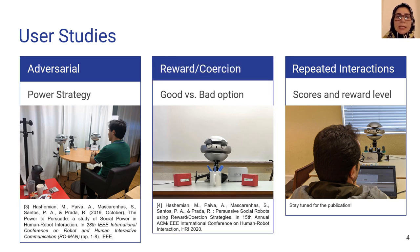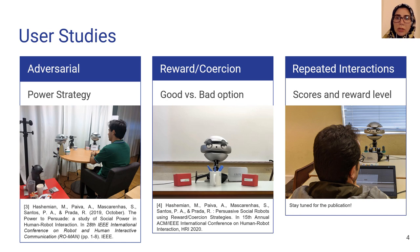In the second study, one single robot was trying to persuade users to select a less desirable choice compared to a better one, using reward and coercion strategy compared to a control condition.